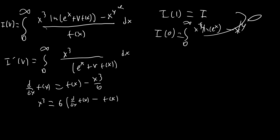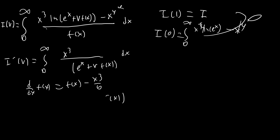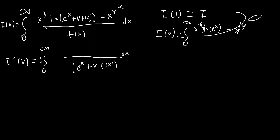So x cubed is equal to 6 times (f(x) minus f'(x)). We're going to go ahead and rewrite x cubed in this situation as that, because now we have everything pretty much in terms of f(x). I'm going to bring that 6 outside, and rewrite the numerator as f(x) minus f'(x). And to make integration easier, we're going to divide by v and multiply by v in the denominator.